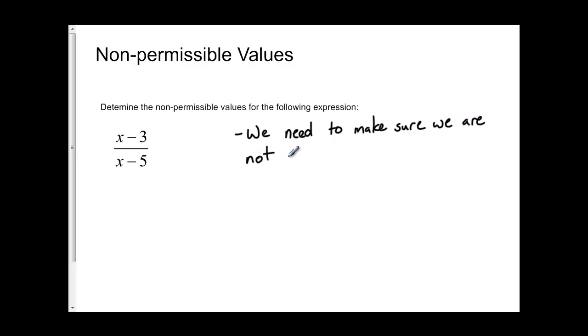So in this expression, all we really care about is the x minus 5. So what we want to do is we want to find out how to make x minus 5 not equal to zero. The equal sign with a line drawn through it means not equal to.